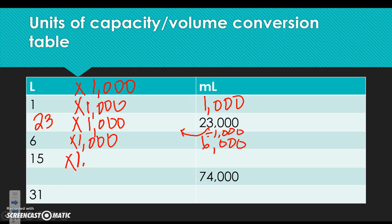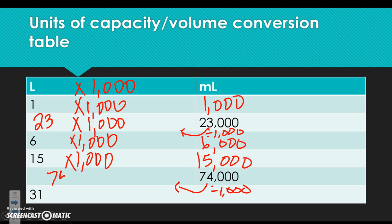15 times 1,000 is 15,000 milliliters. Going backwards, divide by 1,000 to get 74 — check: 74 times 1,000 is 74,000. And 31 times 1,000 equals 31,000.